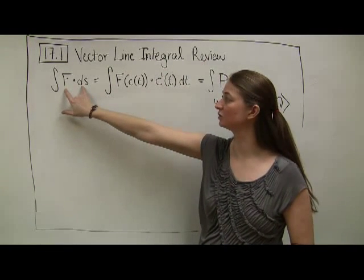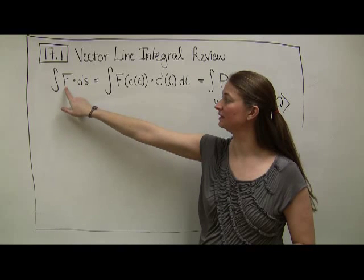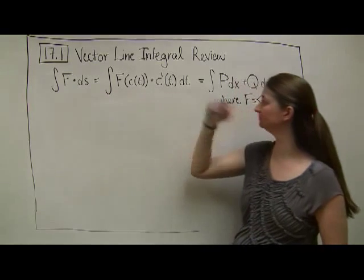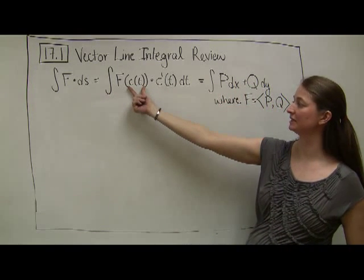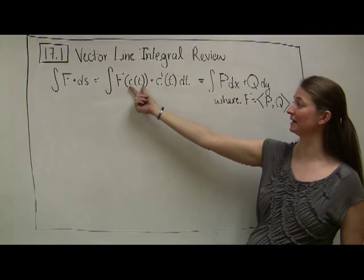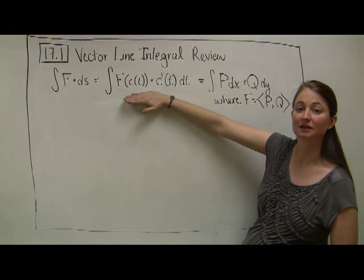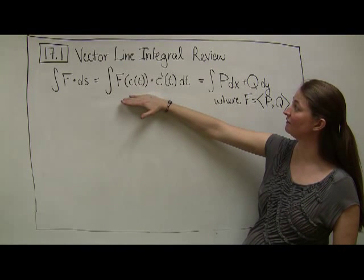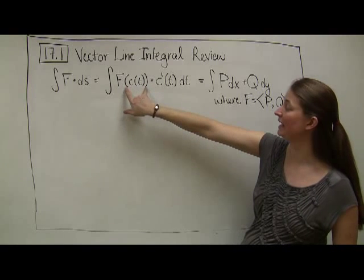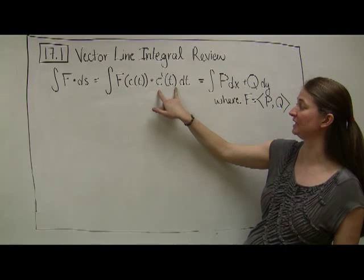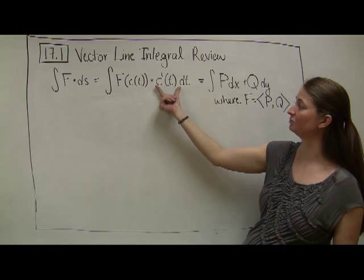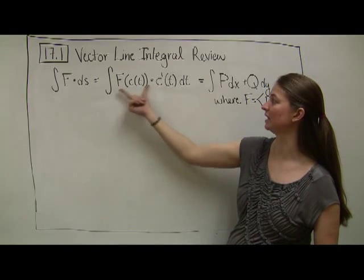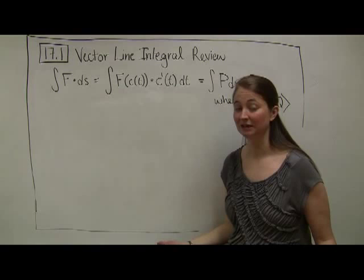Let's start with a quick review of vector line integrals. Recall, a vector line integral is parameterized by some distance, typically a path given by c(t). Our formula is that a vector line integral is given by f(c(t)) dotted with c'(t). It's a dot product instead of multiplying by the magnitude because we're dealing with two vectors.